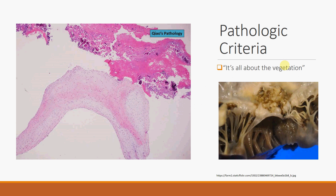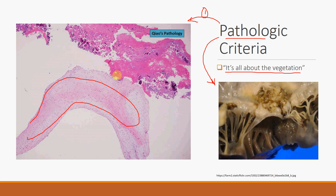Let's discuss the pathologic criteria. It's all about the vegetations. Pathology suggests two entities: histology and microbiology. The histology criterion refers to the histology of the diseased valve leaflets or of the vegetation itself. For example, we see a valvelet — like the mitral valve — with a large vegetation attached. If this is identified, it is a histological pathologic criterion. This typically means the patient has expired, but it is one of the most definitive criteria for diagnosing infective endocarditis by the Duke criteria.